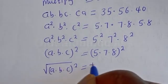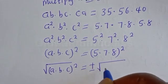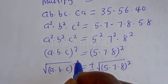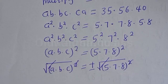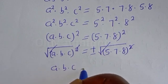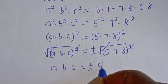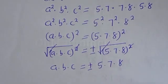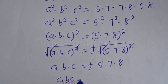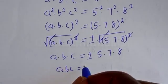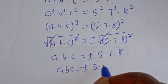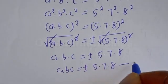Taking the square root of both sides, the squares cancel, giving us A×B×C is equal to plus or minus 5 multiplied by 7 multiplied by 8. Let's call this equation 4.